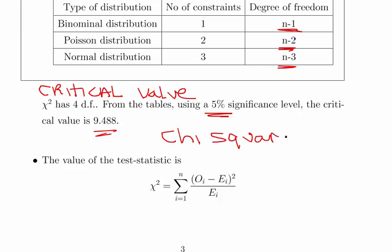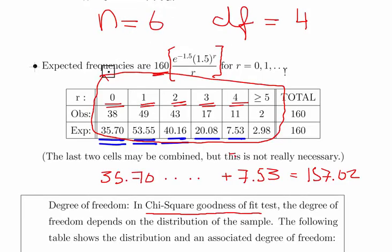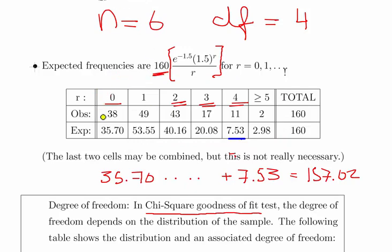Now we're going to calculate the test statistic using the standard formula for the chi-squared test statistic. Take the observed minus the expected, square that, then divide it by the expected value. Just to be clear, these values are our observed values: we have six observed and six expected values.